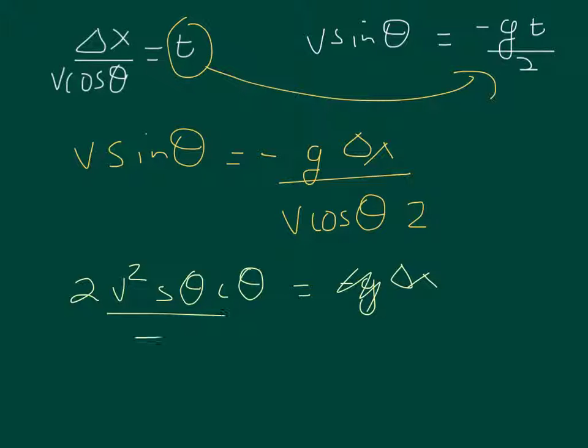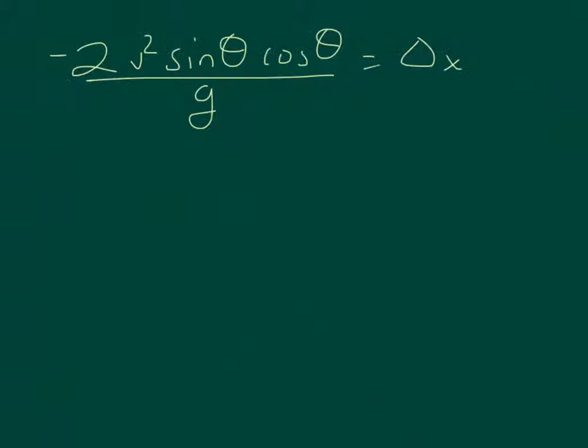I can take the negative g to the other side. Here I have everything I need, except I have a sine of an angle times a cosine of an angle. I can't really solve for angle in this, but there is a very useful trig identity, which is 2 sine angle cosine angle equals sine 2 theta.